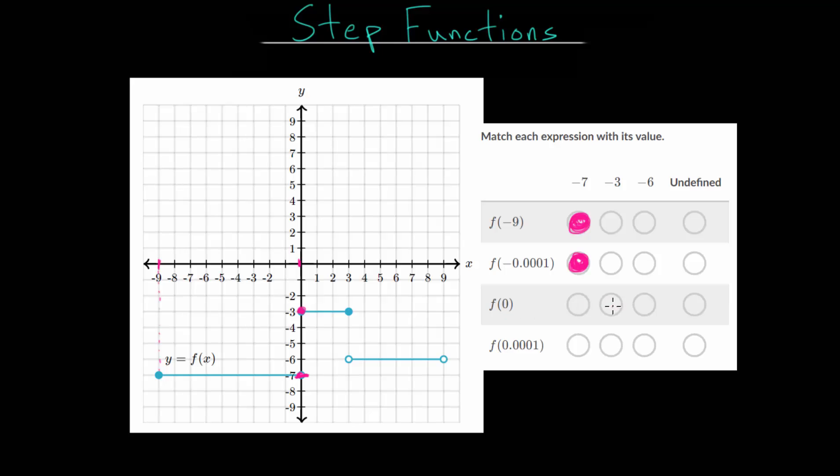So f of zero is negative 3 and then we have f of 0.0001 which is just to the right of zero. But anything from zero all the way to three is going to be at this negative 3 step here. So just to the right of zero that is also at negative 3. And it doesn't change to negative 6 until we get past 3.